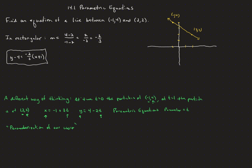This parametrization gives us some real advantages we couldn't have before. We can now introduce the idea of position at a moment in time to our curve. Before, rectangular form just gave us the path of a particle but could never tell us where the particle was at a given moment. Now we can say at time 0 the particle is at negative 1, 4, and at time 1 the particle has moved to 2, 2. This also gives us a direction that the particle is moving along the line.